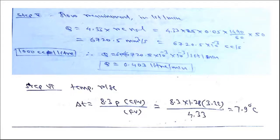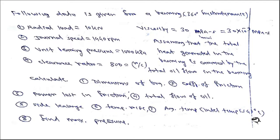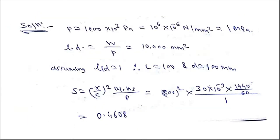The second numerical also involves a 360-degree hydrodynamic bearing with the following data: radial load = 10 kN, journal speed = 1440 rpm, unit bearing pressure = 1000 kPa, clearance ratio r/c = 800, viscosity = 30 mPa·s. Assuming heat is carried by total oil flow, we must calculate: bearing dimensions, coefficient of friction, power loss, total oil flow, side leakage, temperature rise, average temperature (with inlet at 40°C), and maximum pressure.